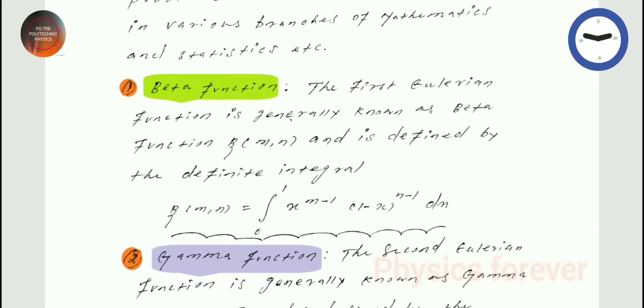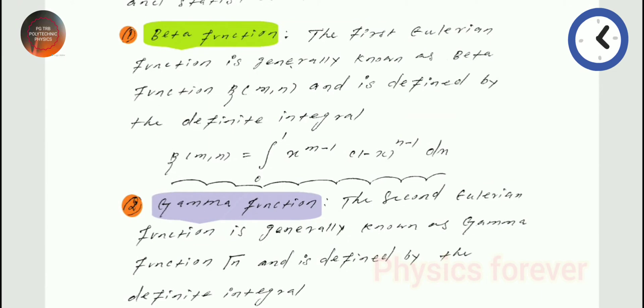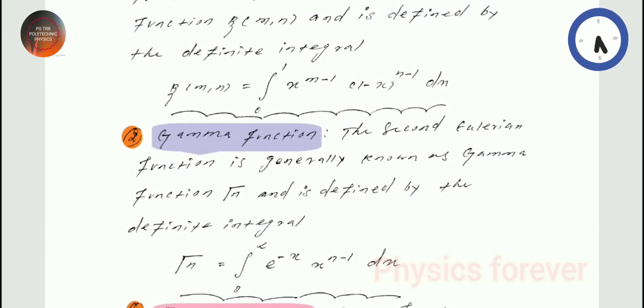In the beta function, the first function is generally known as the beta function, and it is known as a definite integral. How to write it: beta(m, n) is equal to the integral from 0 to 1 of x to the power (m minus 1) times (1 minus x) to the power (n minus 1), then dx.